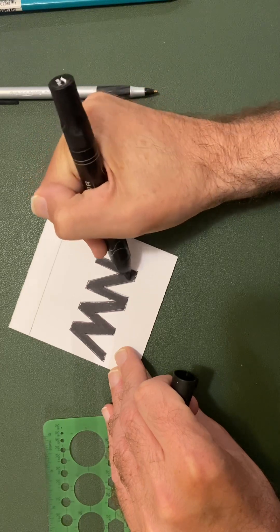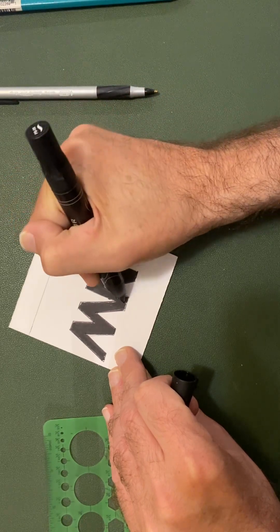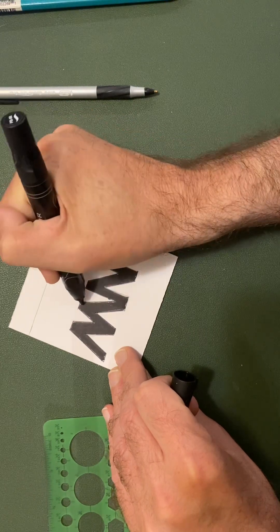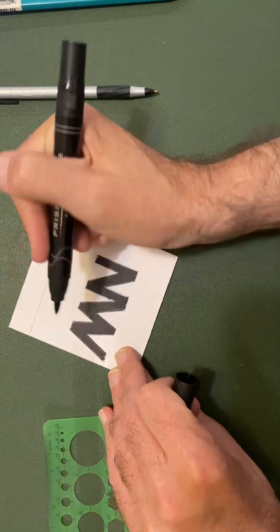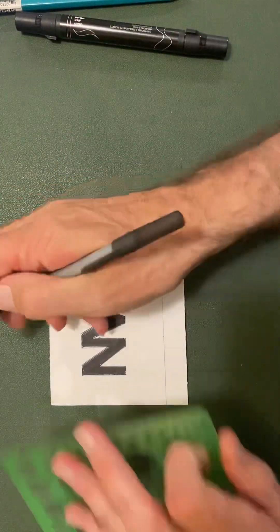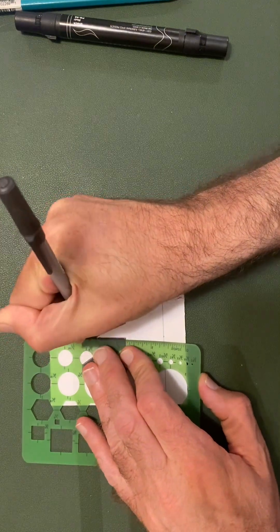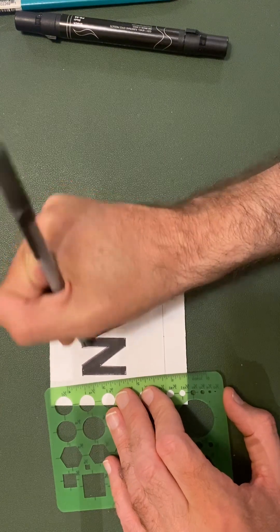And then kind of what you do is, little places that you miss, you kind of touch up on them. Unlike right here, there's a little place where it went over a little tiny bit. So I'll touch that up and straighten it up and here's a few spots.